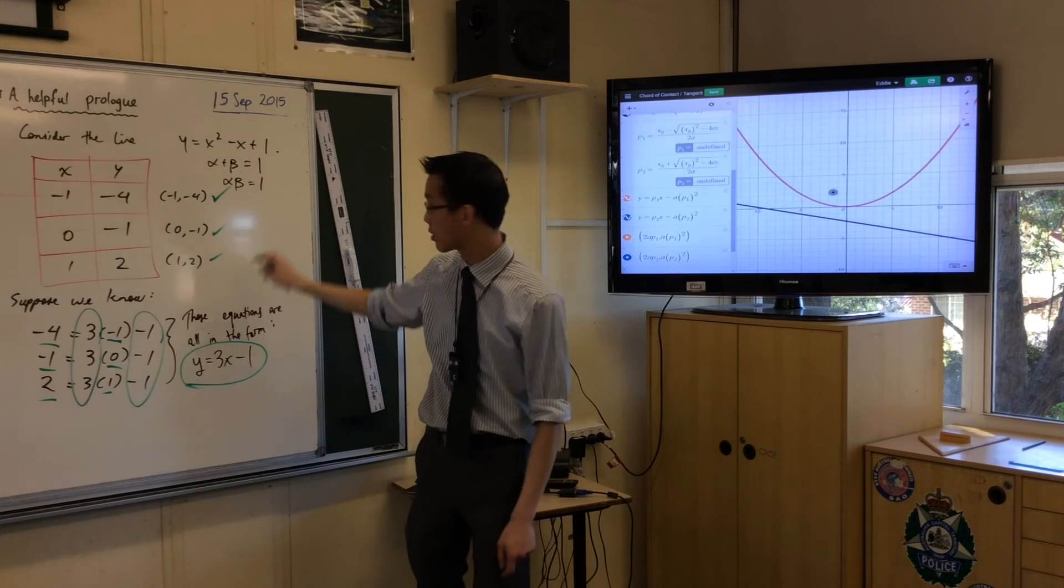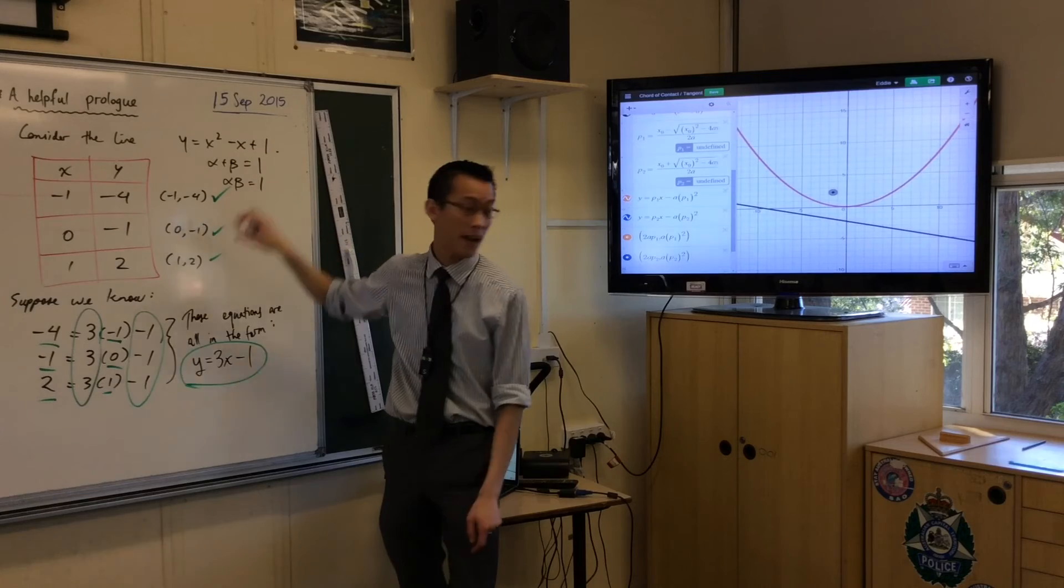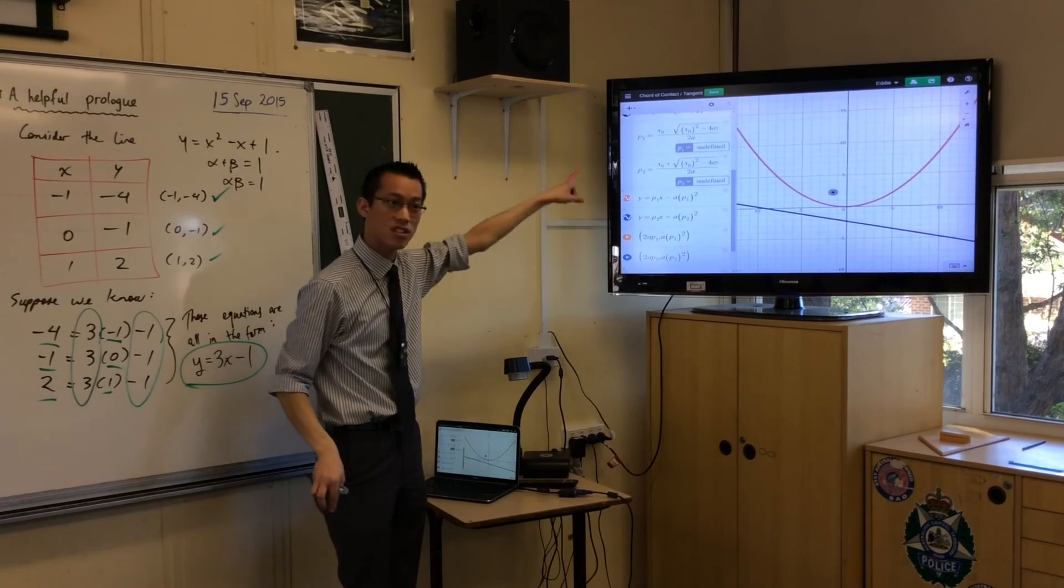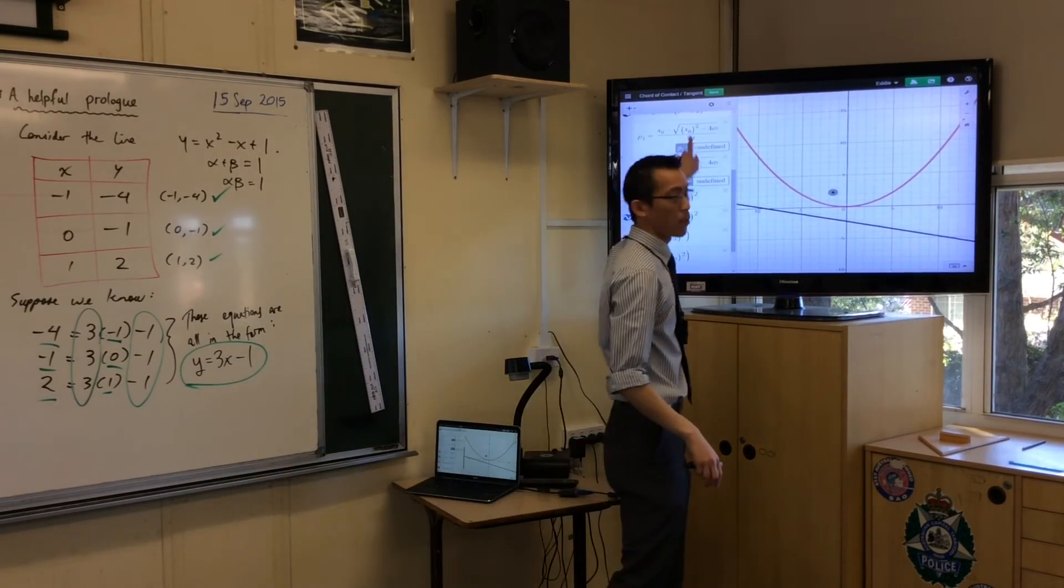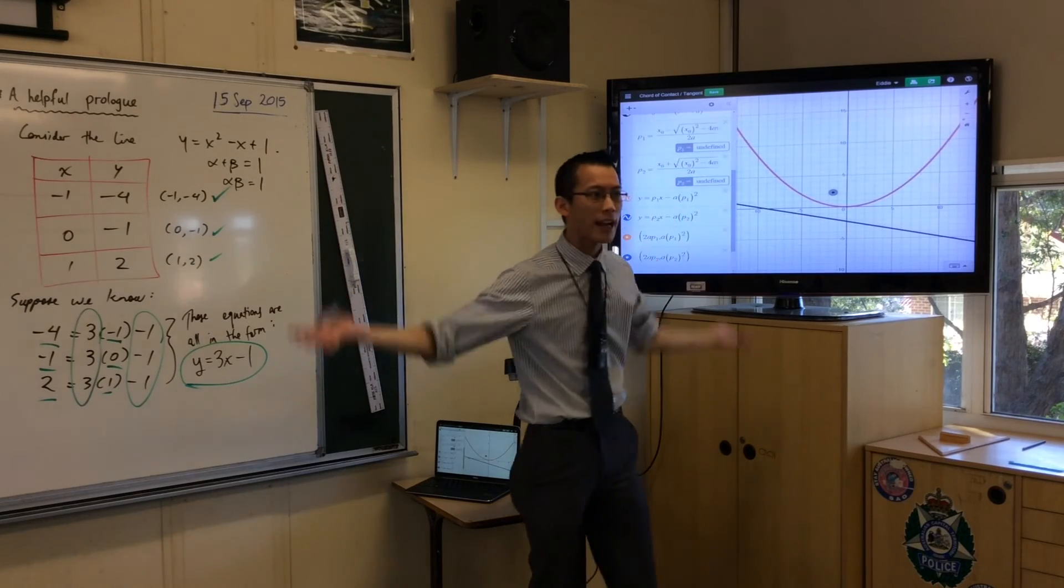They're not real numbers, but you can still do mathematics with where these equations should go, even though it can't find these points, just geometrically. Why can't it find points?